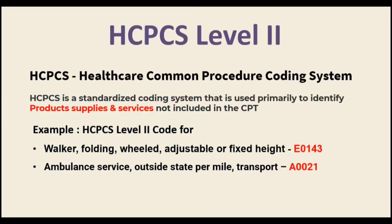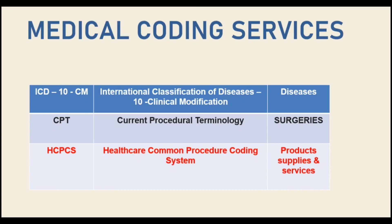HCPCS Level 2 stands for Health Common Procedure Coding System. It is a standardized coding system primarily used to identify products, supplies, and services not included in CPT. For example, if a patient needs a walker, the code is E0143; for ambulance services outside state permits transport, the code is A0021. In overview: ICD covers diseases, CPT covers surgeries, and HCPCS covers services, equipment, and transport.